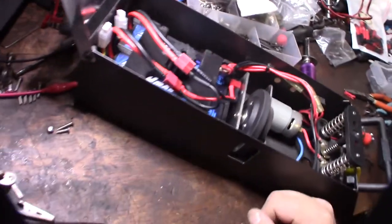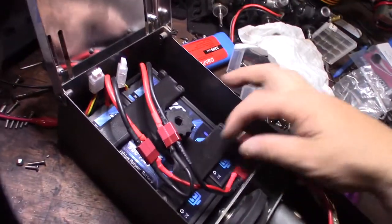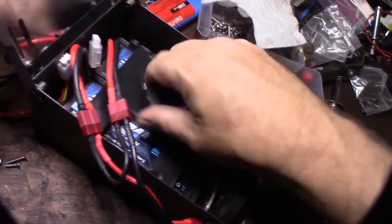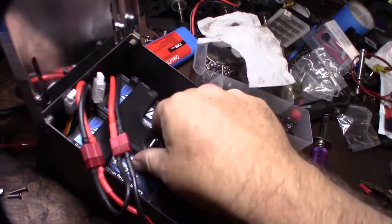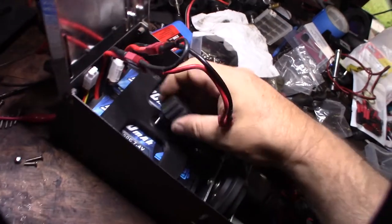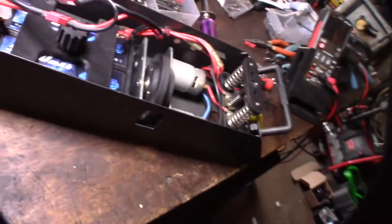All right. So let me give you an update on this bump box. I forgot to film what I was doing there. But I converted this over to Dean's connectors and I designed this in Fusion 360. It's a battery box for double lipos. And yeah, Dean's connector.